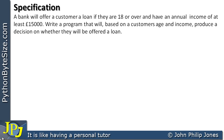Let's consider the specification: a bank will offer a customer a loan if they are 18 or over and have an annual income of at least £15,000. Write a program that will, based on a customer's age and income, produce a decision on whether they will be offered a loan. The actual program for this specification is shown here.